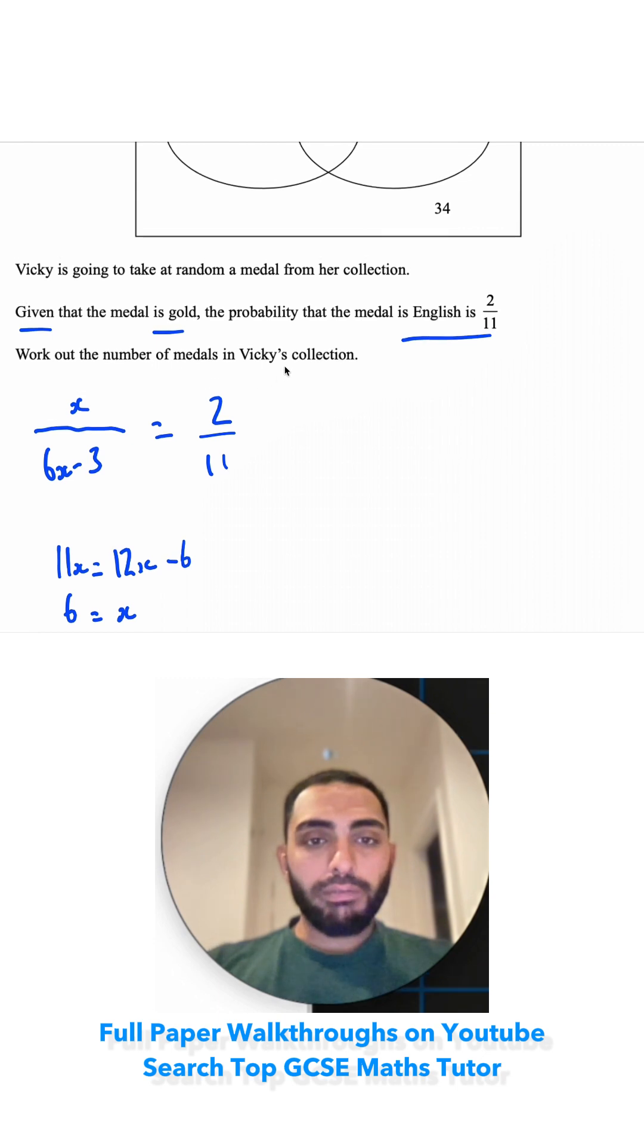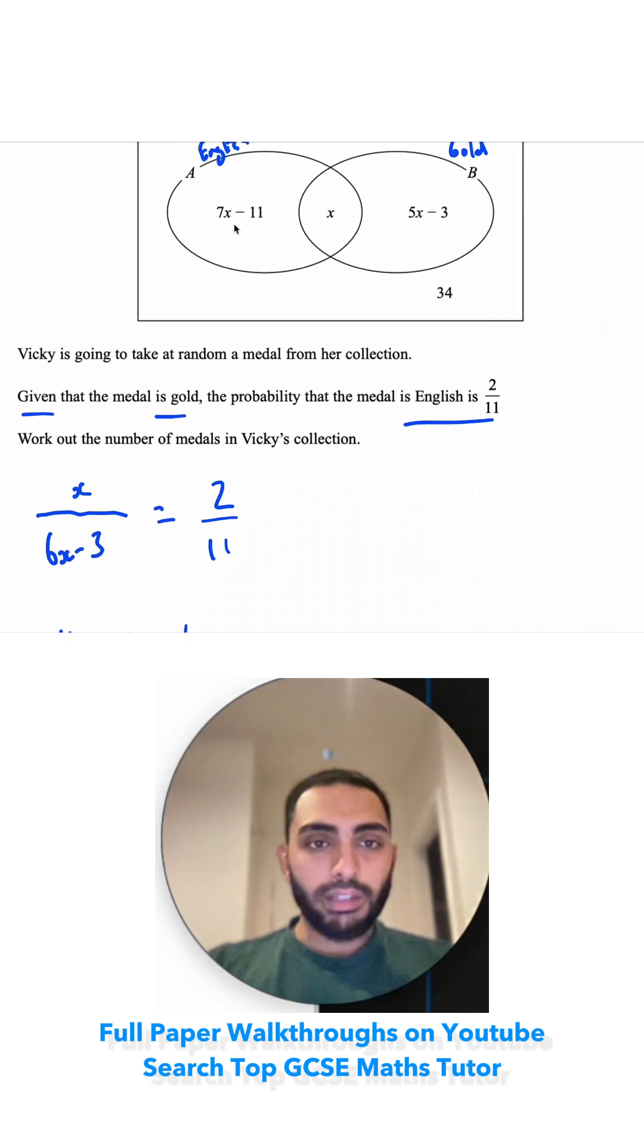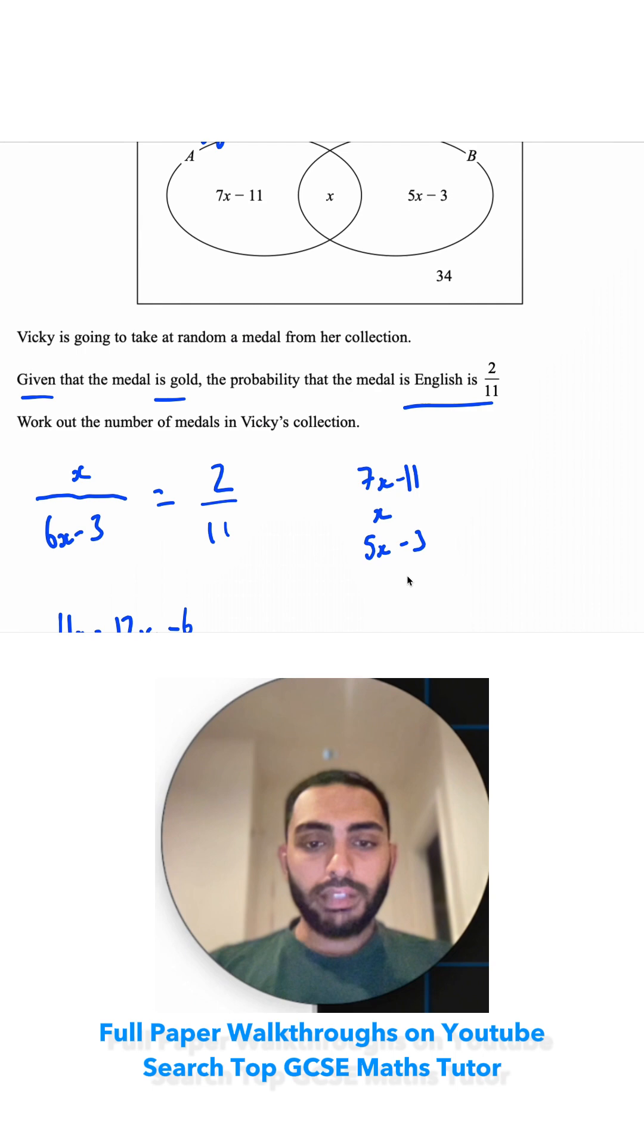We're trying to work out the number of medals in Vicky's collection. So either we can substitute x into all of these, or I can create an expression and just substitute it into that. I think I'm going to do the second option just because it'll be easier overall. So I've got 7x minus 11, add x, add 5x minus 3, add 34.